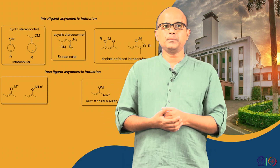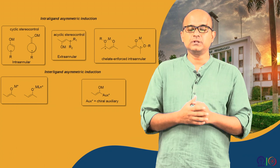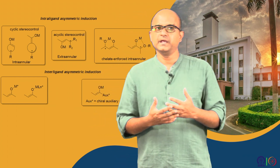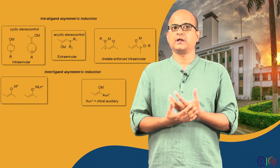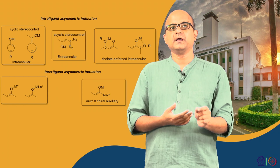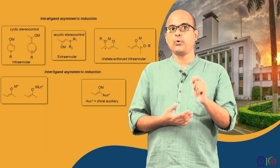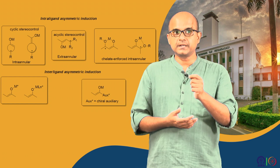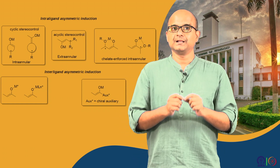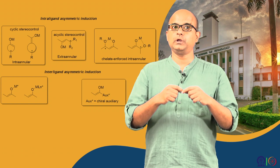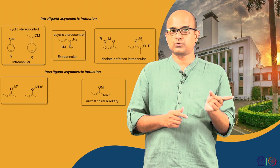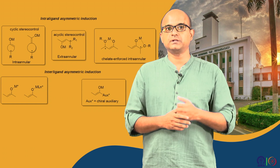We will cover how you can control asymmetric alkylation using different working models. In some cases, the substrate itself contains a stereogenic center, meaning that the existing stereocenter can serve as a predictive model for where the electrophile will approach to create the new stereocenter. This is called intramolecular asymmetric induction — the chirality is intrinsic to the existing carbonyl compound. We will also discuss cyclic and acyclic stereocontrol depending on the nature of the substrates.